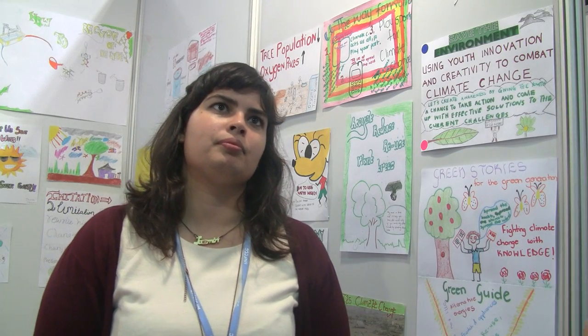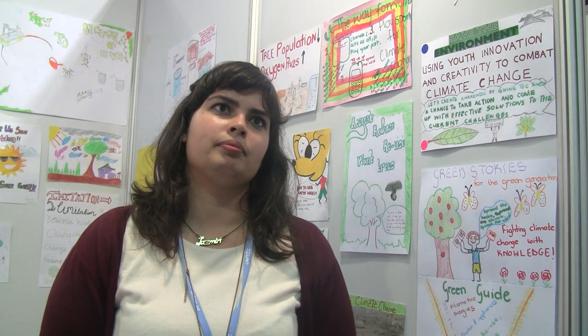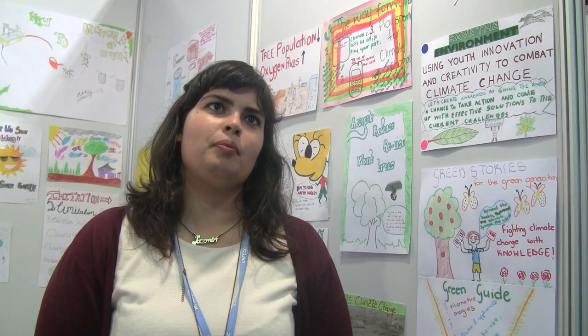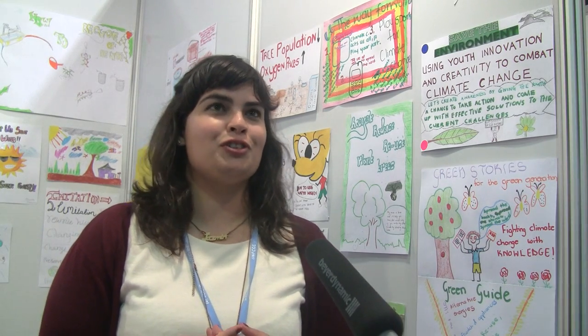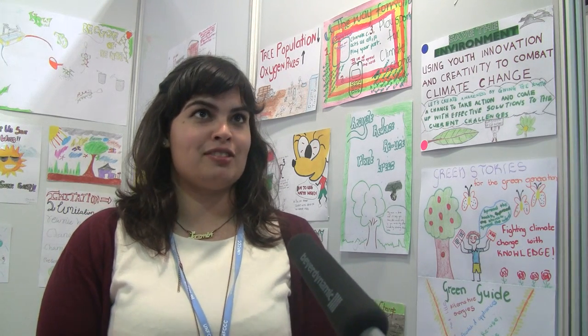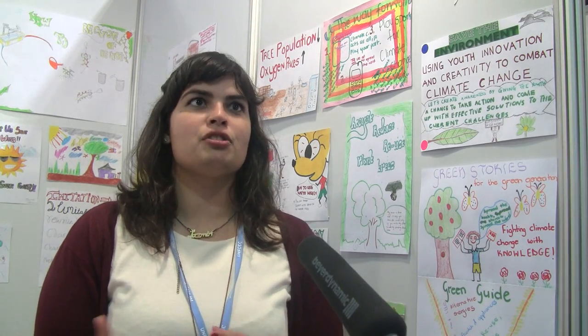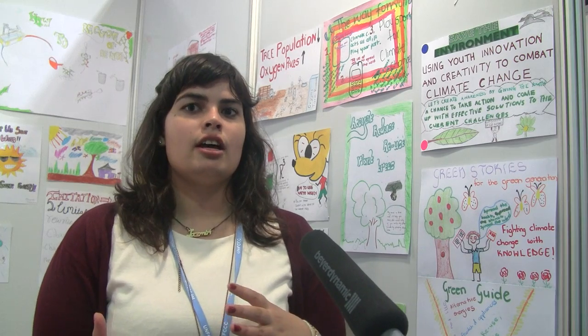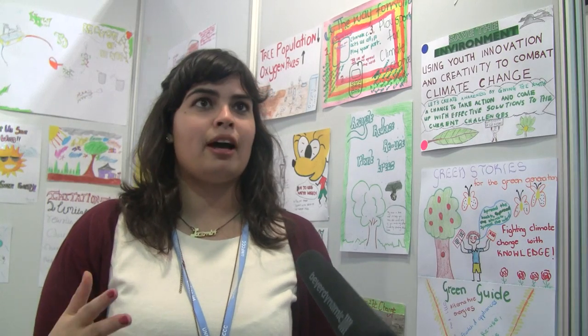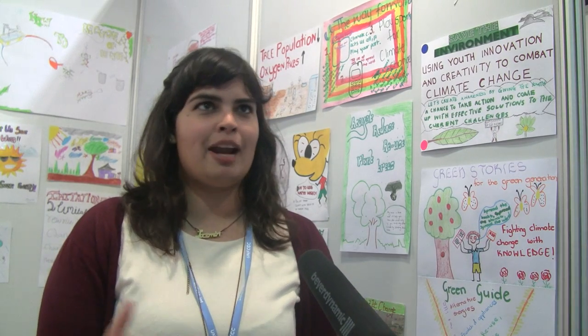UNICEF focuses primarily on children and youth. How is adaptation specifically related to children and youth? Children are often the most vulnerable in climate situations, so the need to have them be able to cope with the impacts of climate change is absolutely essential. They're seeing a lot of their basic rights being impacted by the onset of climate change, and so adaptation is core to making sure they can grow and develop.